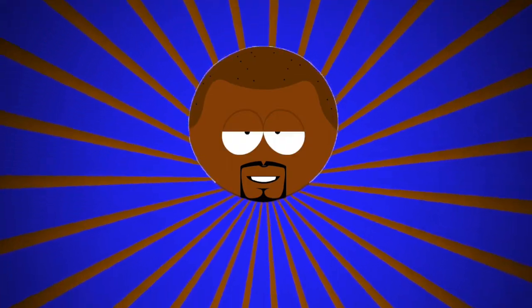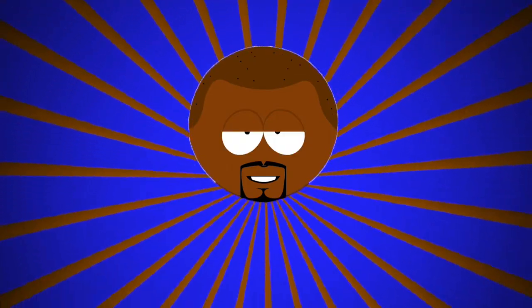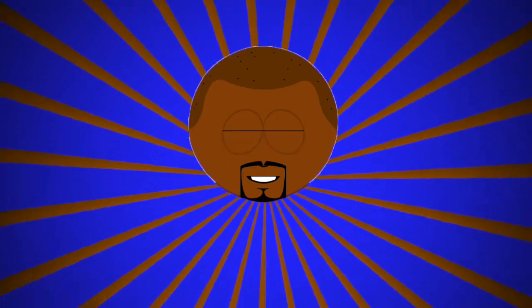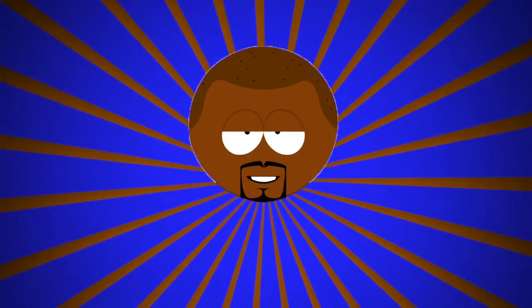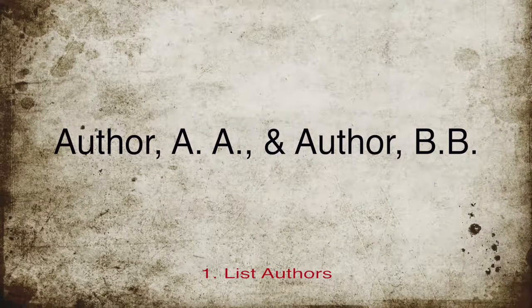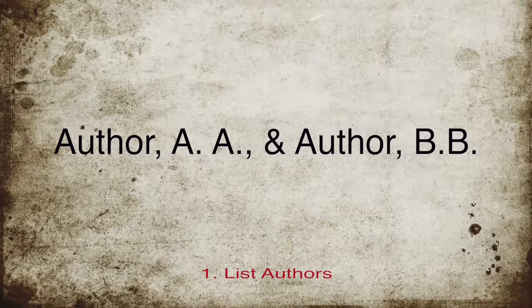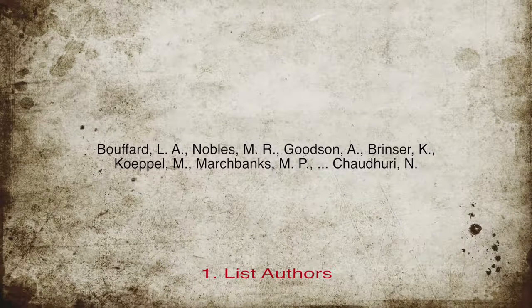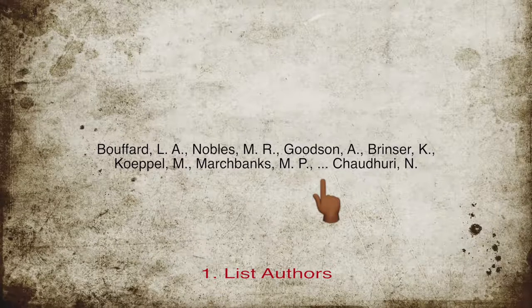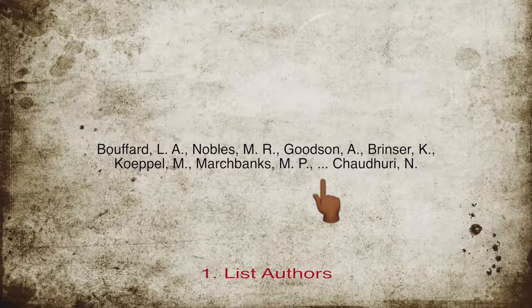Hi, I'm Jared. Here's how you cite an article from a database in APA style. Authors should be listed last name, comma, initials. If you have seven or more authors, list the first six, add a bridge with an ellipsis, and then include the last author.